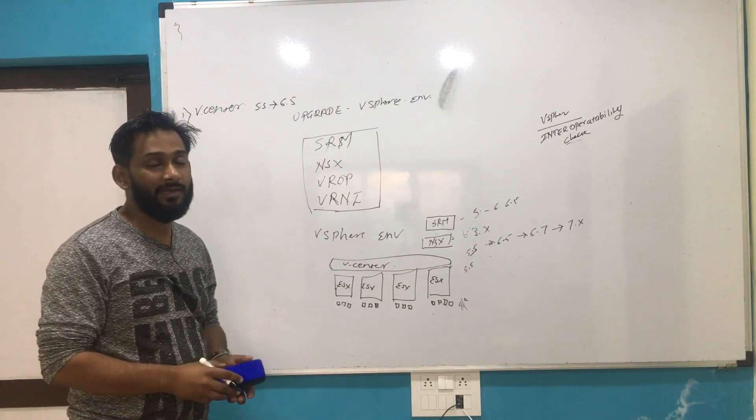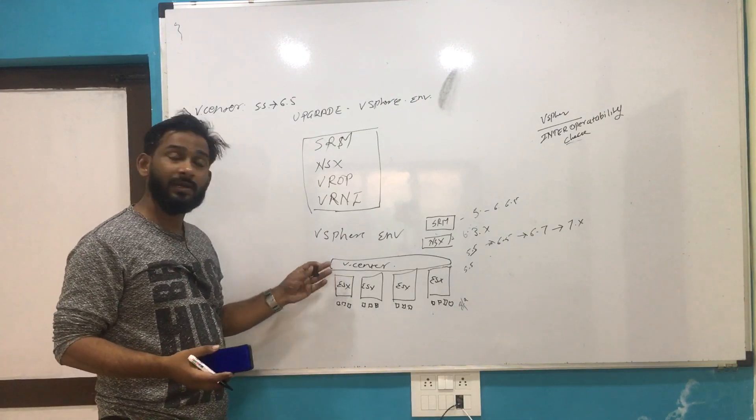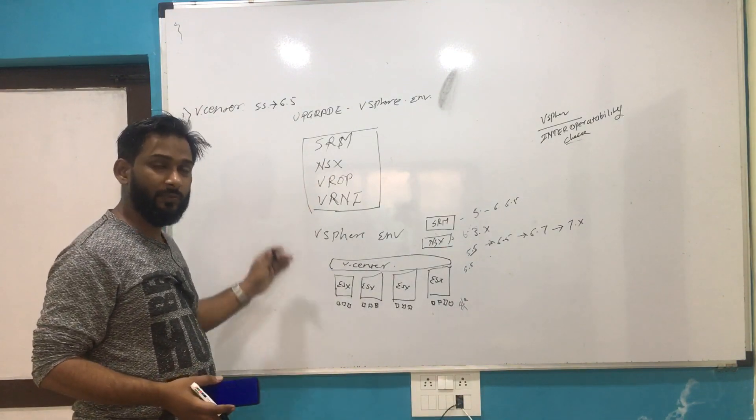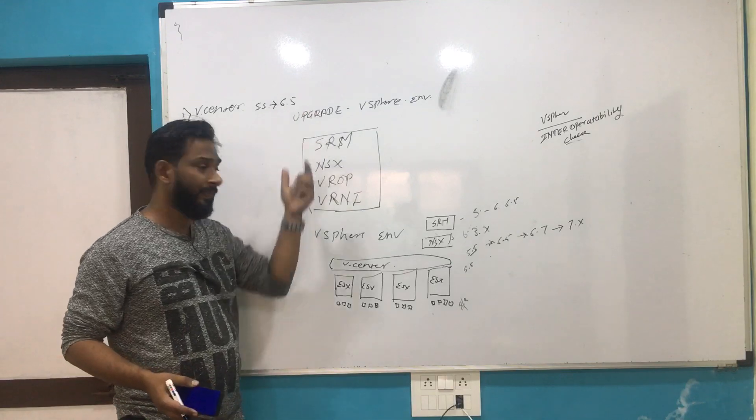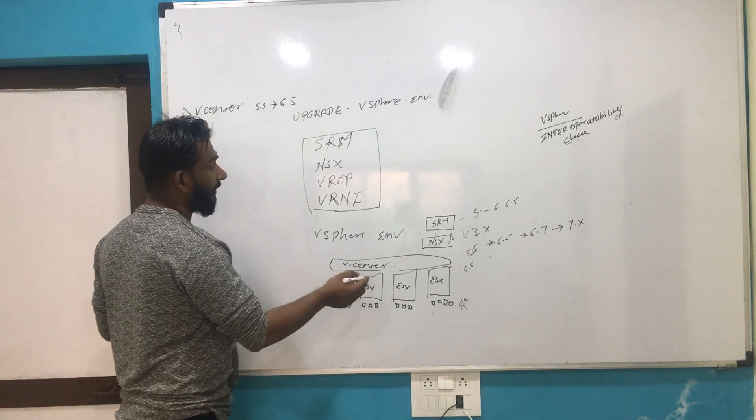You do the vCenter Server upgrade from 5.5 to 6.5. Once that is upgraded, you have two options. We can talk in detail about the upgrade, but we're just talking about the approach. We'll go from 5.5 to 6.5 while ESXi is still on 5.5.